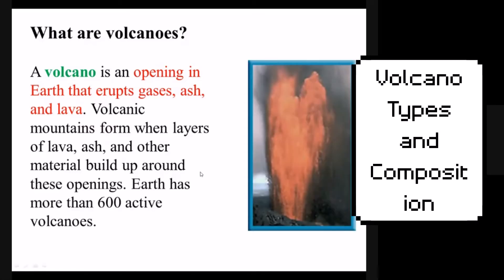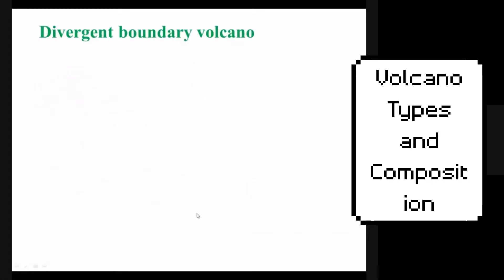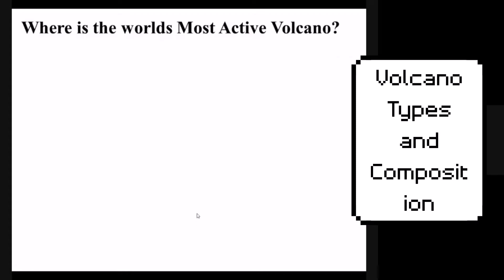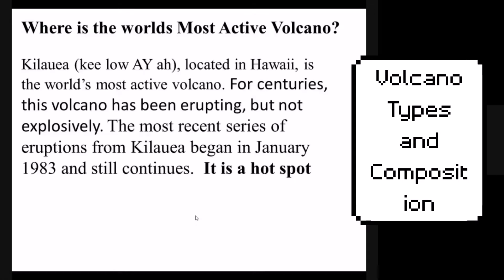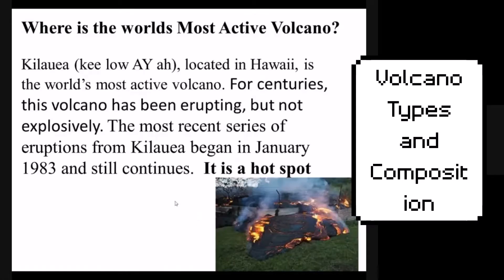Different types of volcanoes form from different parts — some volcanoes are mostly ash, while others are mostly lava. There are over 1,300 volcanoes that are either active or dormant on Earth, but about 600 are active right now. The first type we will cover is the world's most active: the hotspot volcano.